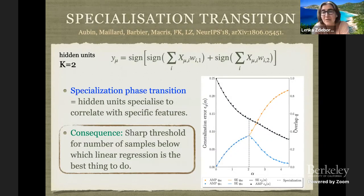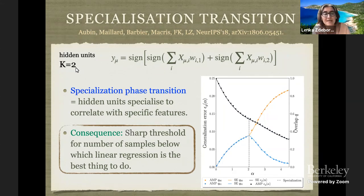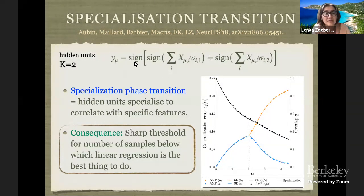If you actually apply this formula and try to learn what's going on in the committee machine, one thing that is interesting is what's called the specialization transition. You can see this in the simplest possible case where you have two hidden units and just one hidden layer — K equals two and M equals two. The teacher is using this function where I use the notation sign of zero. Here I'm plotting the generalization error in black, and in orange and blue are the order parameters as a function of alpha — the number of samples divided by the dimension.